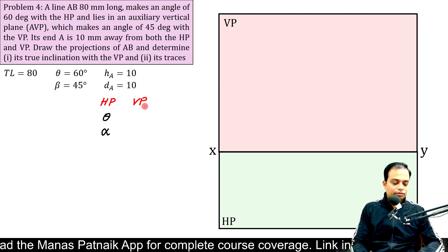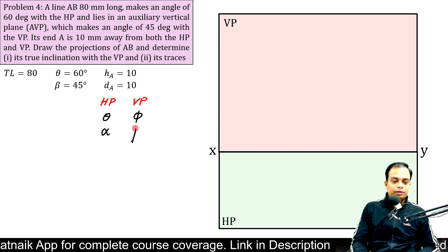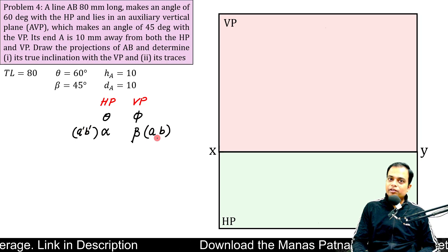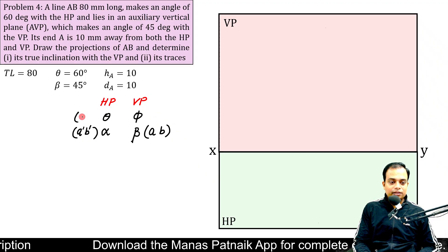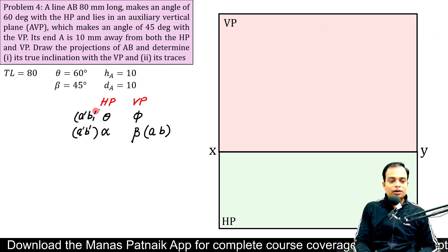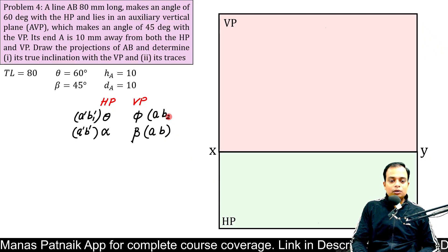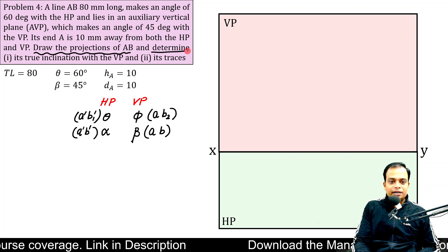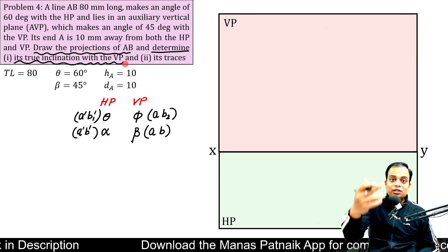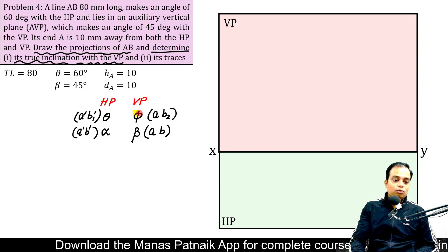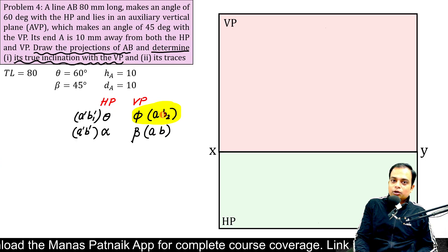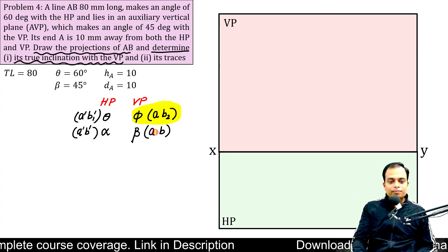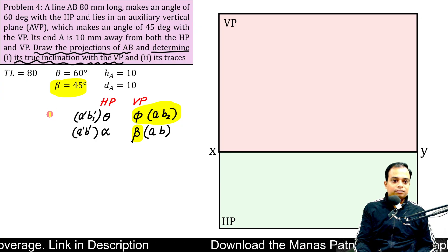Let me just give you a very small demonstration. Angle made with HP, it's either theta or alpha. At the same time, the angle that the line makes with VP, it could either be phi or it could be beta. Please note this, alpha is the angle made by the front view of the line. Beta is the angle made by the top view with VP. This theta is the angle made by the true length of the line. So let's represent the true length by A dash B1 dash and this is AB. And if you read the question further, it has been clearly stated that you have to draw the projections and determine the true inclination with the VP. That means you need to find this angle phi. Once the top view is located, this phi angle can be worked out.